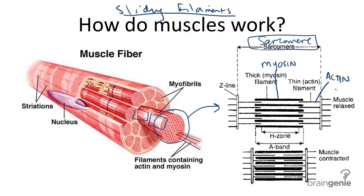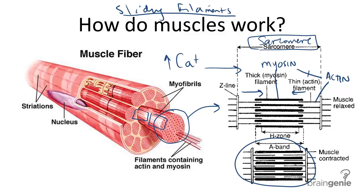When a nerve impulse reaches a muscle, calcium is released into the myofibrils. These calcium ions cause the myosin and actin filaments to attach to one another. When they attach, the myosin filaments drag the actin filaments to the center of the sarcomere, as you can see here.